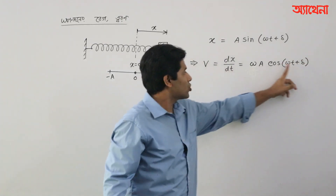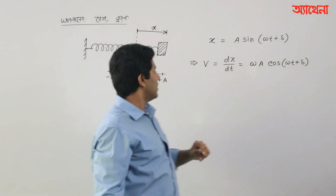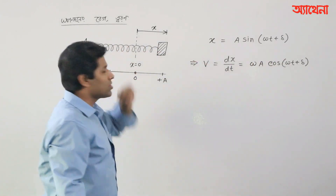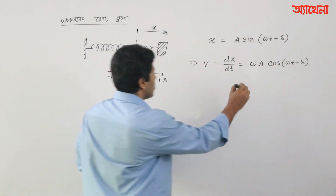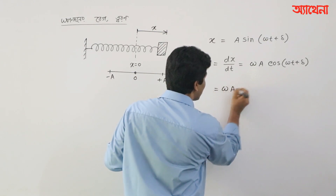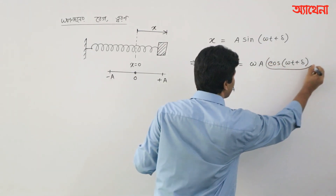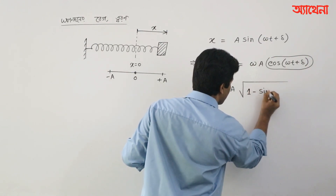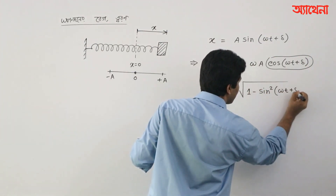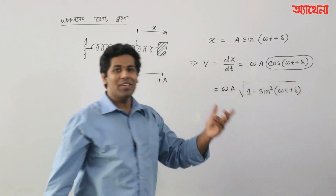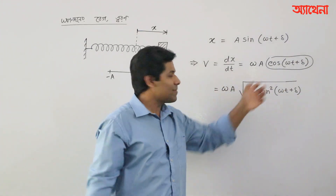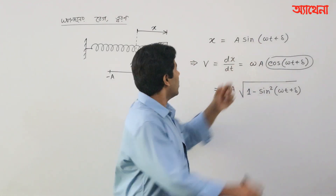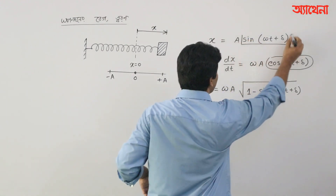This is the derivative with respect to time. So, what do you need to do? Omega is equal to a times 2. Cos of something means root over 1 minus sin squared(omega t + delta). So, sin(omega t + delta) means sin(omega t + delta).